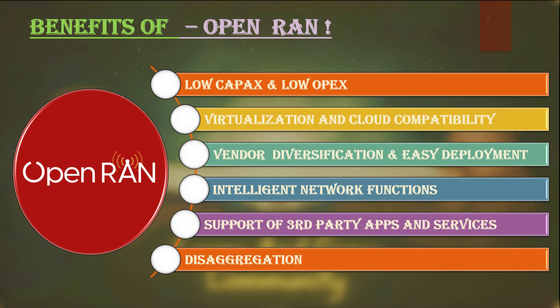Any telecom network has three major divisions: radio access network, core network or switch which is like a data center, and transport which interconnects the RAN with the core network. The components used in radio access network systems are one of the highest CAPEX-contributing parts, so evolving the RAN will have a good impact on CAPEX. Open RAN can help optimize CAPEX for service providers.